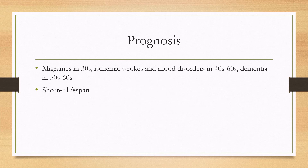In terms of prognosis, the typical course can start with migraines in someone's 30s, progressing to ischemic strokes and mood disorders in their 40s to 60s, and then eventually dementia in their 50s and 60s. People with the disease also tend to have a shorter lifespan, often living only into their 60s or early 70s.